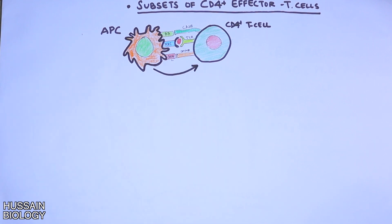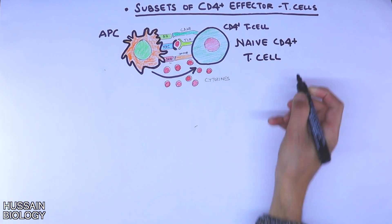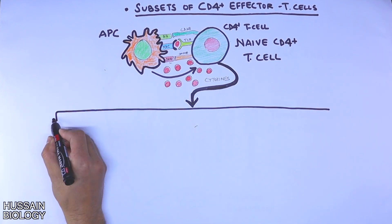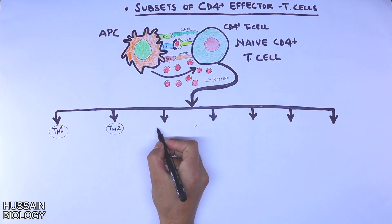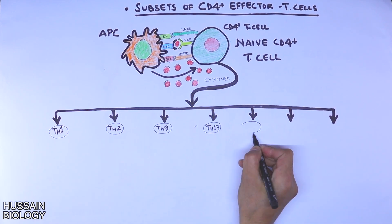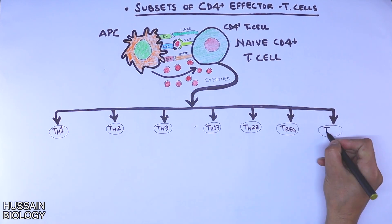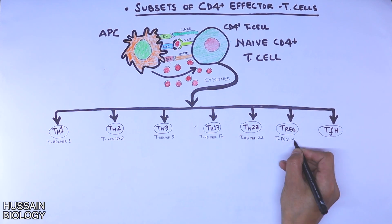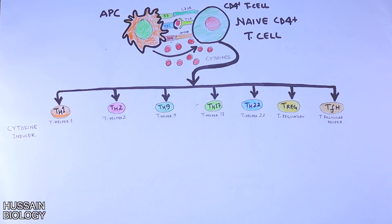When all the interactions occur — stimulation and co-stimulation — there is ultimately production of cytokines which are released by the APC, and these induce the differentiation of CD4-positive cells into different subsets. From these subsets we get TH1 (T helper cell 1), followed by TH2, TH9, TH17, TH22, then TREG (T regulatory cell), and TFH (T follicular helper cell). The differentiation of each subset is driven by specific cytokines.